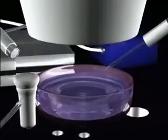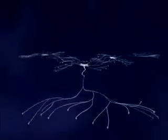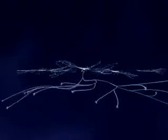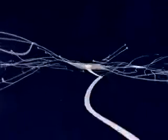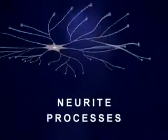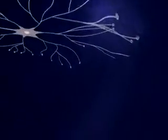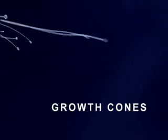To better understand mercury's effect on the brain, let us first illustrate what brain neurons look like and how they grow. In this animation, we see three brain neurons growing in a tissue culture, each with a central cell body and numerous neurite processes. At the end of each neurite is a growth cone where structural proteins are assembled to form the cell membrane.